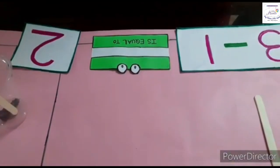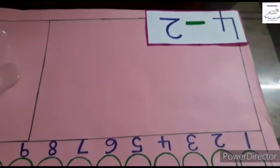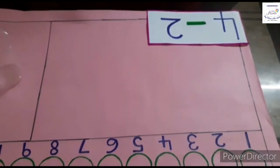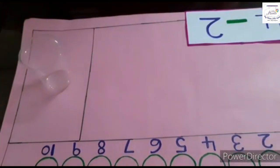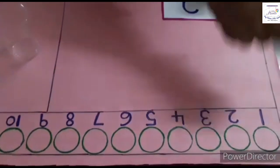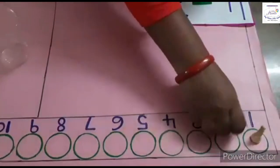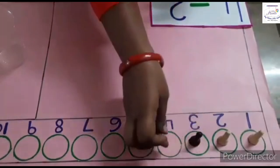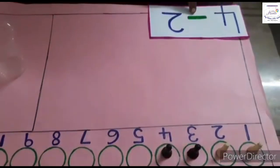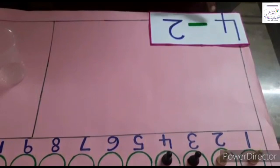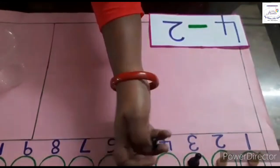Children, let us do another one. Now I am taking numbers 4 and 2. I am taking 4 chess coins: 1, 2, 3, and 4. 4 minus 2 means I am removing 2 from 4. 1 and 2.